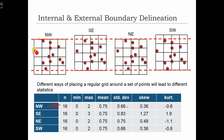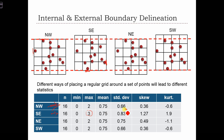Instead of matching the points on the north and west sides, we could instead match them on the south and east sides. If we place the grid matching the southern and eastern boundaries, we get a different row in the table. Here the maximum for any grid cell, instead of being 2, is 3, which might suggest a stronger case that a particular neighborhood in the city has a lot of cholera cases. The mean is the same, and the standard deviation is a little bit different, but not dramatically so.